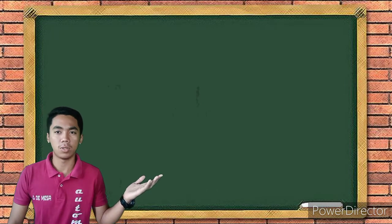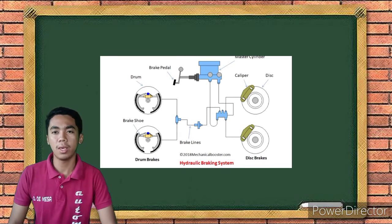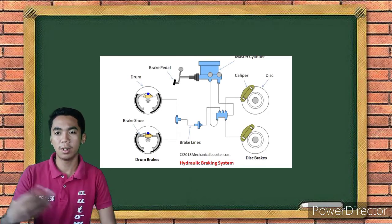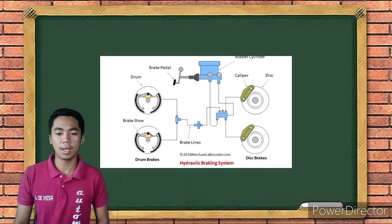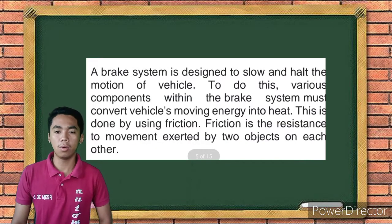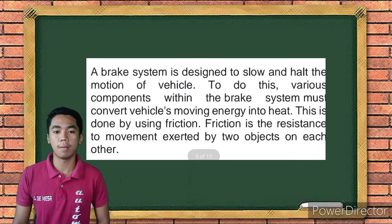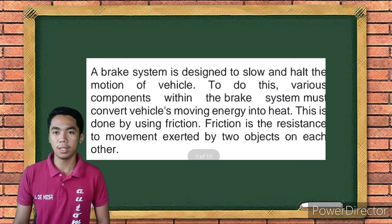Class, take a look at the image that I've posted. Can you name what particular system in the automobile is being shown in the image? The image that is posted is the brake system. Very good. Let me discuss the brake system. A brake system is designed to slow and halt the motion of the vehicle. To do this, various components within the brake system must convert the vehicle's moving energy into heat. This is done by using brake friction.